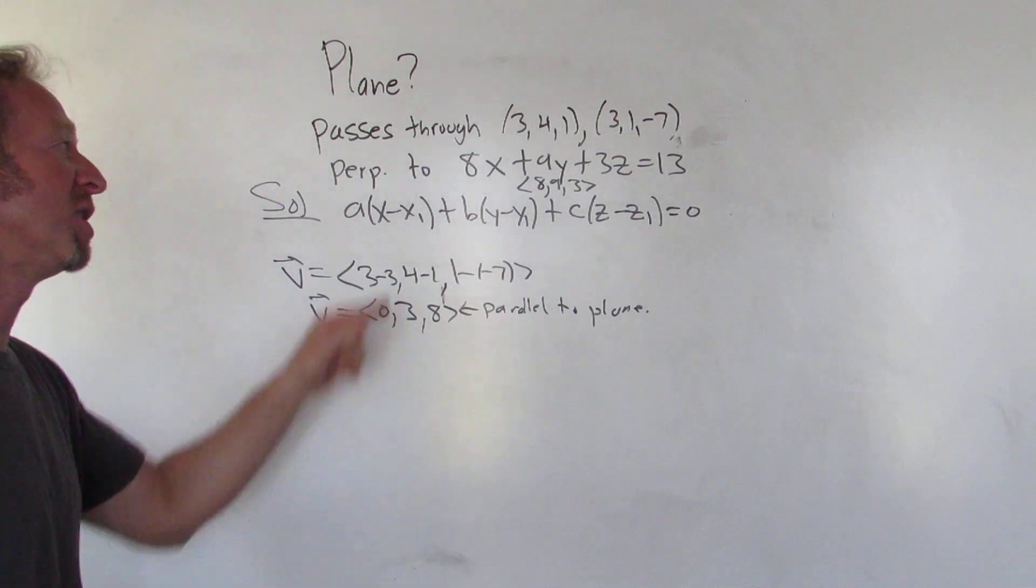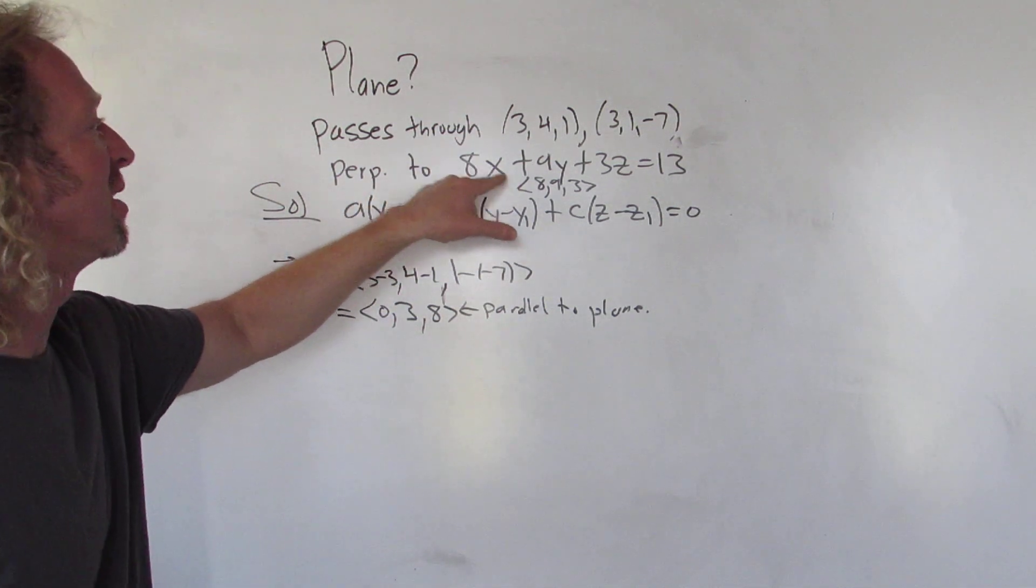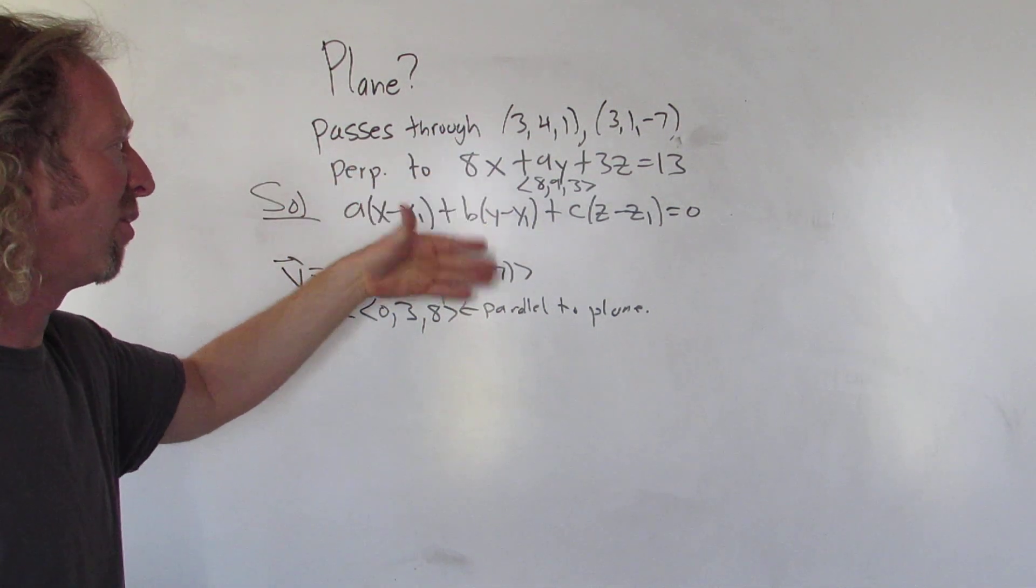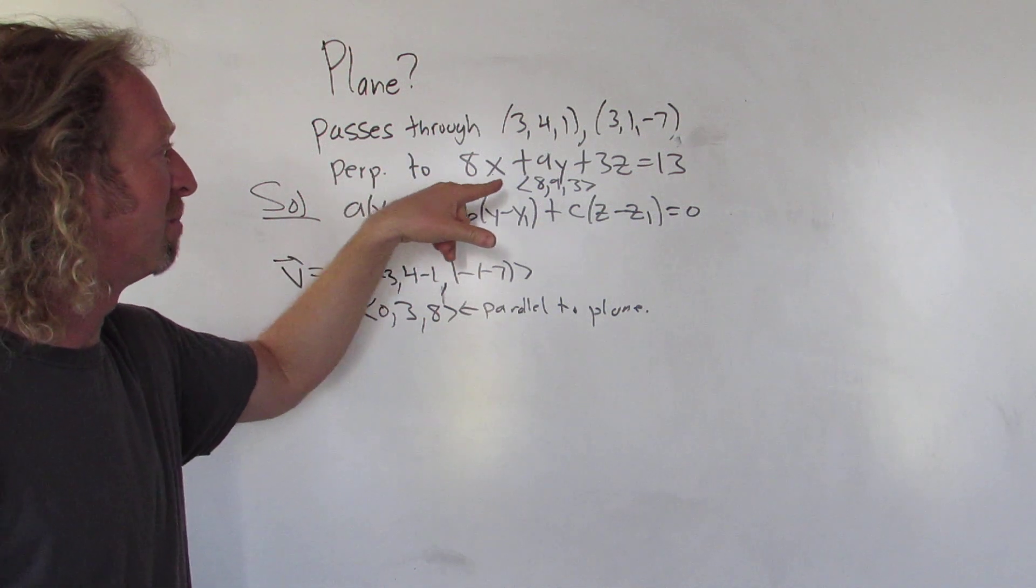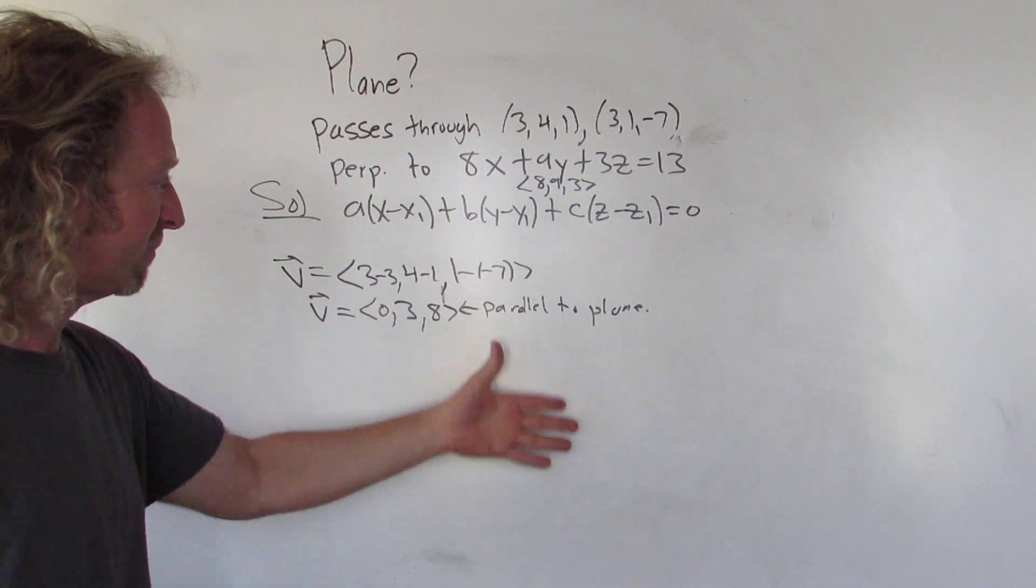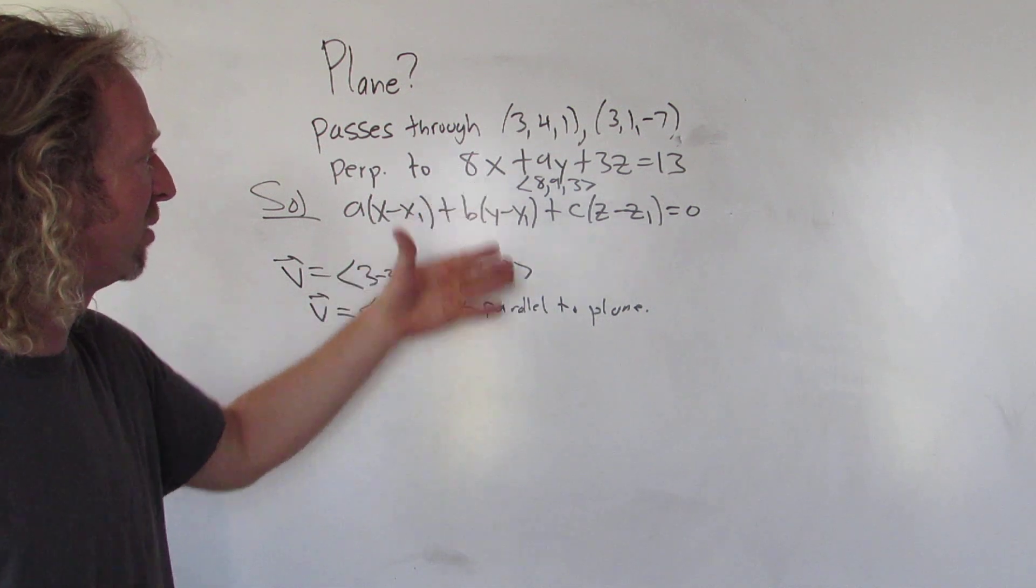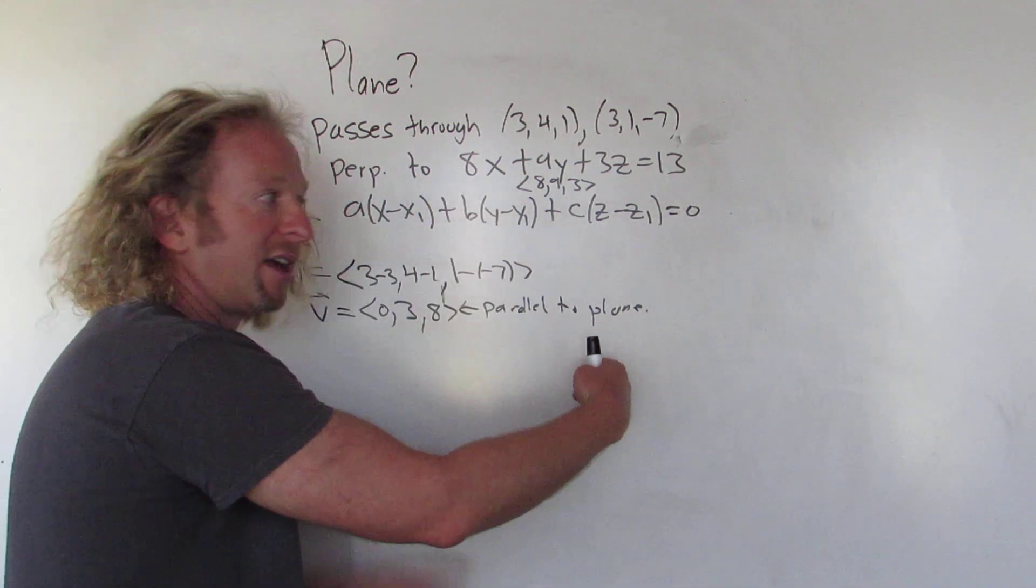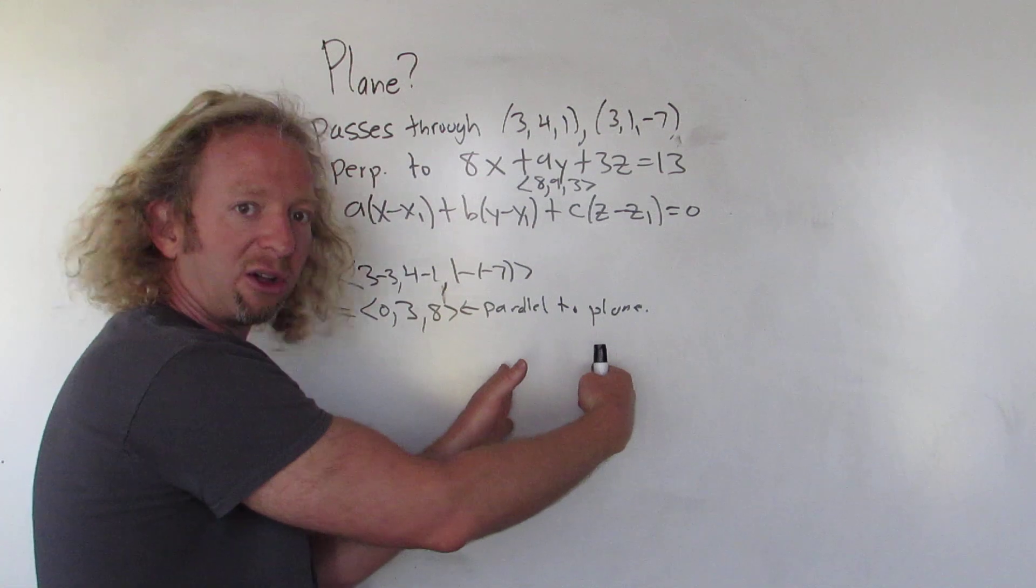Again, our plane is perp to this guy. This vector is perp to this guy. Therefore, our plane is parallel to this. Think of the board as this plane. If the board is this plane, our plane is perp to it. This vector is perp to it. Oh look, they're parallel.